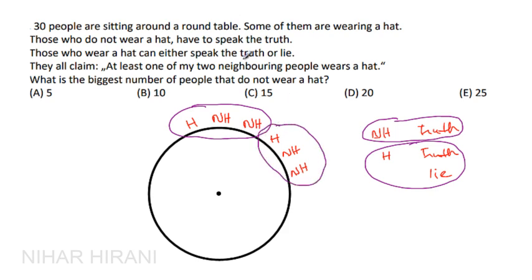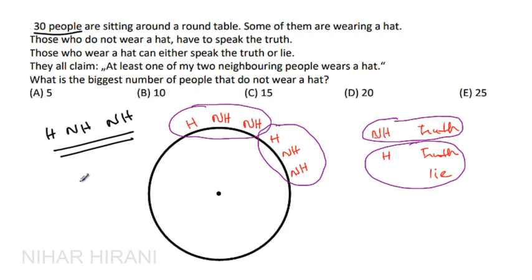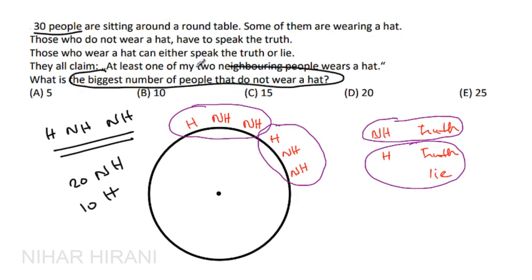This pattern repeats 10 times because there are 30 people. Repeating the pattern H, NH, NH ten times gives 20 people not wearing a hat and 10 people wearing a hat. The question asks for the biggest number of people that do not wear a hat — that is 20. I hope you find it useful.